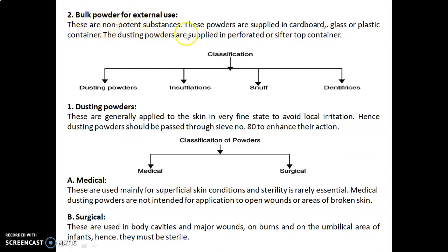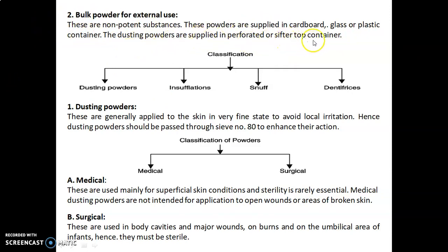Bulk powder for external use: these are non-potent substances. These powders are supplied in cardboard, glass, or plastic containers. The dusting powders are supplied in a perforated or sifter-top container. The classification of bulk powder for external use is: first, dusting powder; then insufflations; snuffs; and dentifrices.